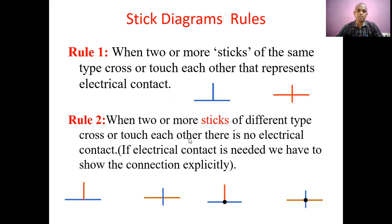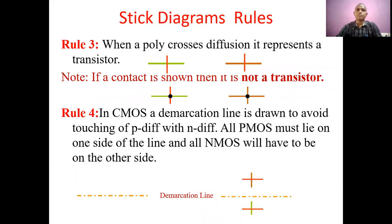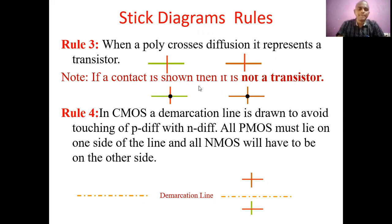When two or more sticks of different types cross or touch each other, there is no electrical contact. If we require electrical contact we have to place a contact cut. Rule number three is when polysilicon crosses the diffusion it represents a transistor. If you use a contact cut while crossing poly with diffusion, that is not a transistor formation. These three rules are applicable for both NMOS and CMOS.